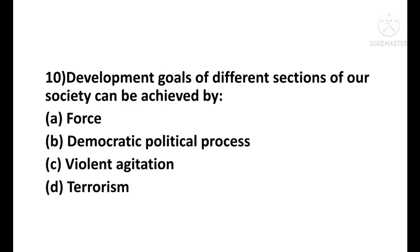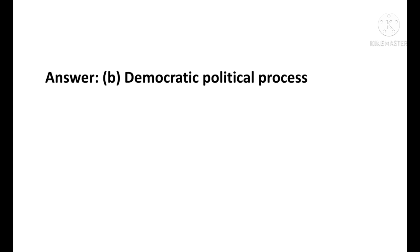Question number 9: Developmental goals of different sections of our society can be achieved by — Option A: one fourth. Option B: democratic political process. Option C: violent agitation and terrorism. The correct answer is Option B — democratic political process.